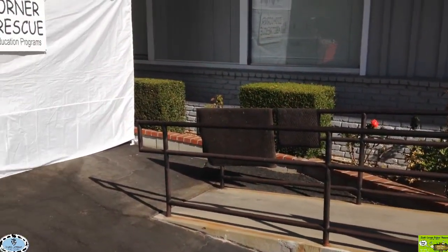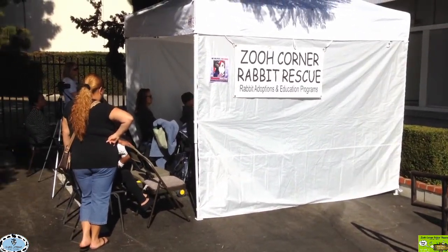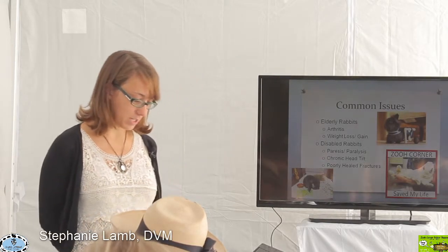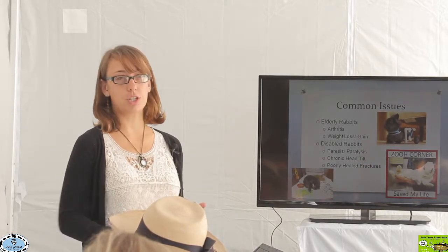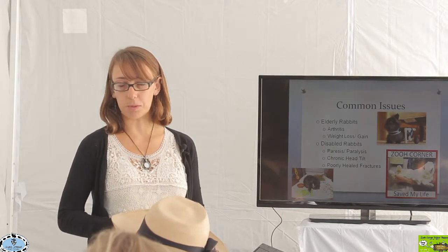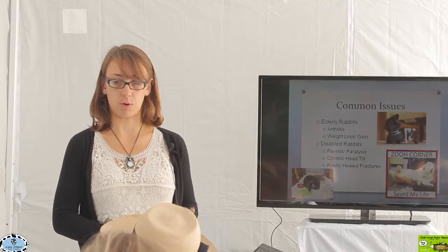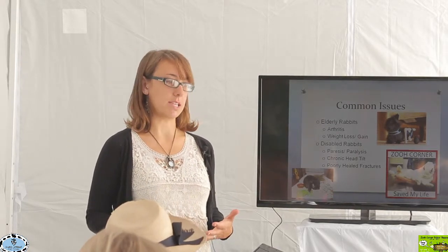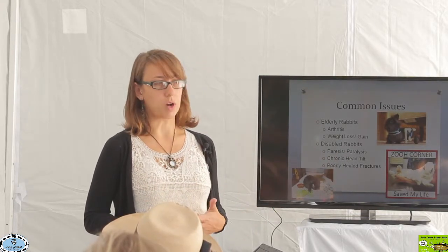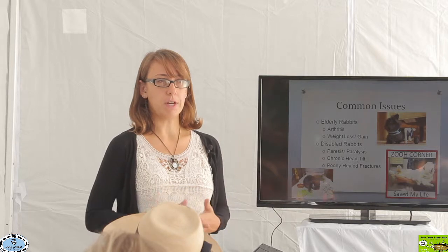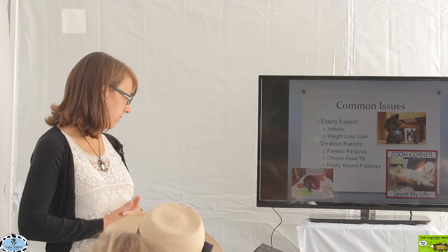Today we're going to be talking about elderly and disabled rabbits — common issues we see in elderly rabbits. The first thing to know is age is not a disease, but we do start to see certain issues more commonly in older animals. The common issues include arthritis — that's the biggest one in any species — as well as weight loss and weight gain problems, which are sometimes more frequently identified in the older rabbit.